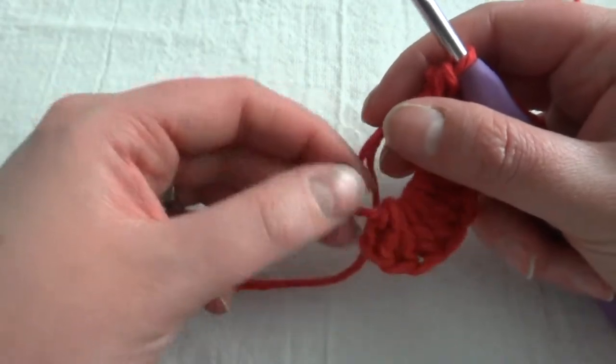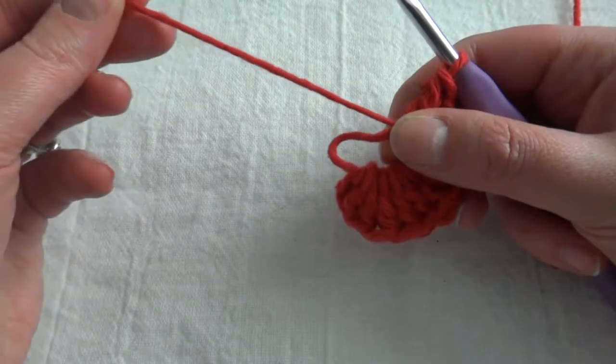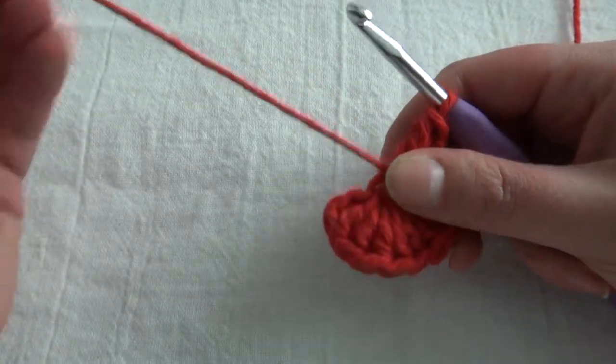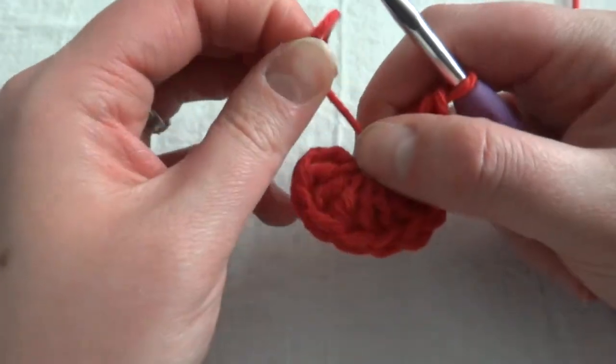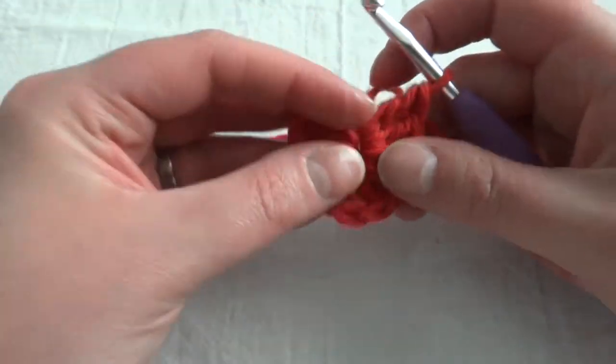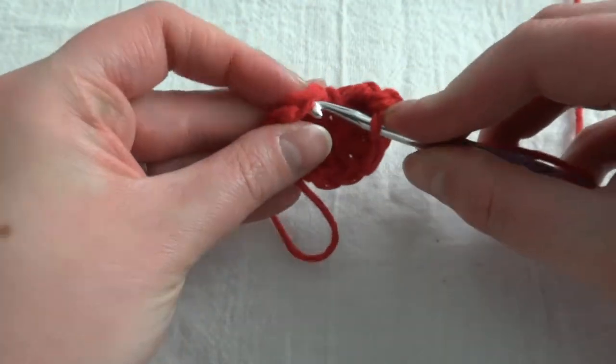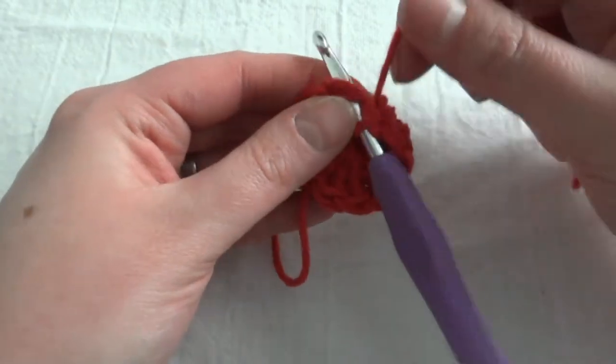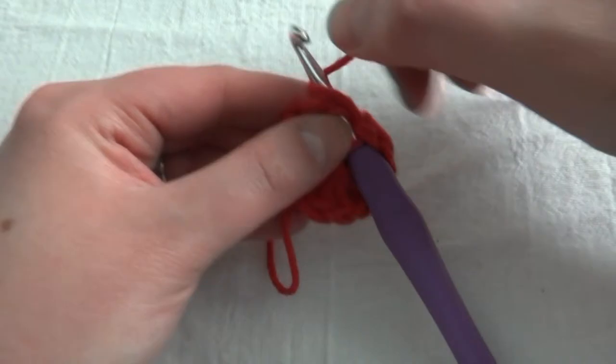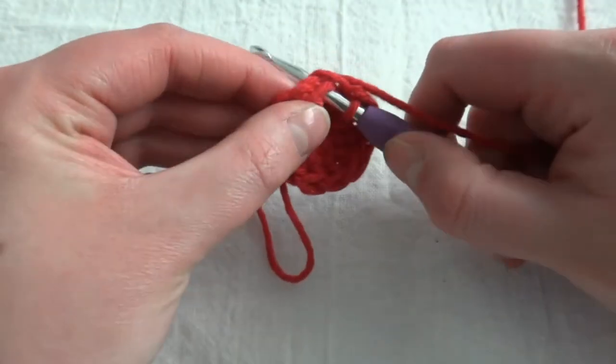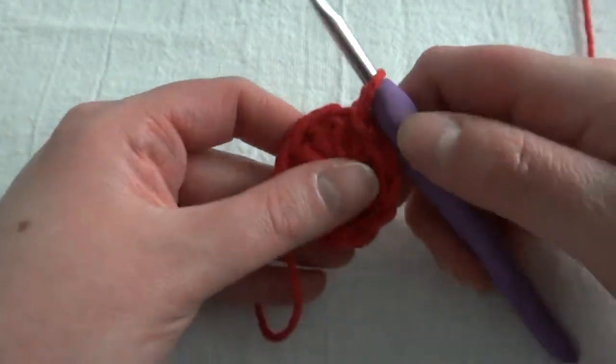So now we'll just do the magic part of our ring, which is where we just pull this string and our ring will close up. And then from there you'll just join with a slip stitch like you would with any other project in the round. So you'll put your hook through the top loop of the first stitch and then join with a slip stitch.